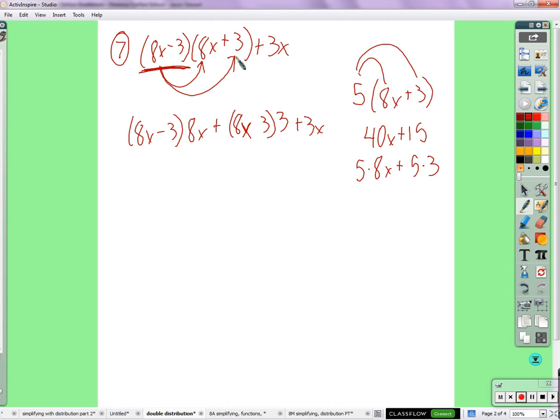It's an easier, simpler way I've done to help people understand. It's the same thing. Now we have 8x minus 3 times 8x, Randy. And 8x minus 3 times 3 plus 3x. What would I do next, Randy? You still need me to call it. Distribute what? 8x to the 8x. Okay, and that gives us? 64x squared. Yes.